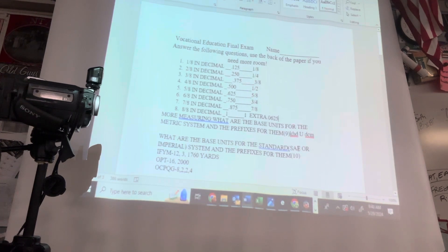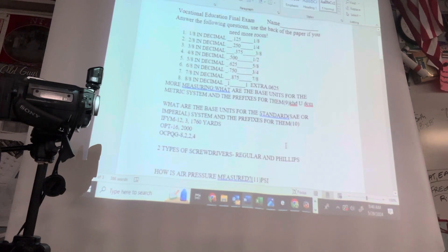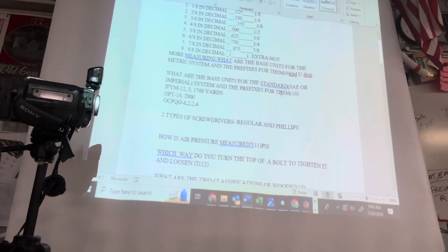What are the base units for the standard system SAE, what they call Society of America Engineers or Imperial System? The easy one is weight: ounces, pounds, tons. 16 ounces in a pound, 2000 pounds in a ton. For distance: inches, feet, yards, miles. 12 inches in a foot, three feet in a yard, 1760 yards in a mile. Also 5280 feet. For volume: ounces, cups, pints, quarts, gallons. Eight ounces in a cup, two cups in a pint, two pints in a quart, four quarts in a gallon.